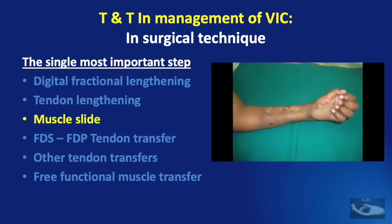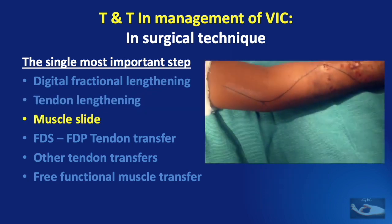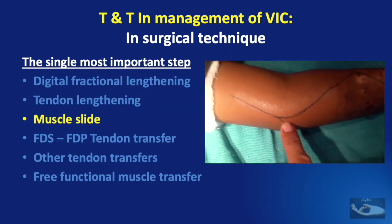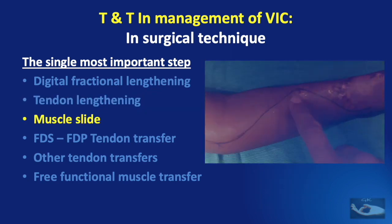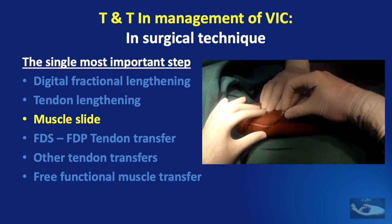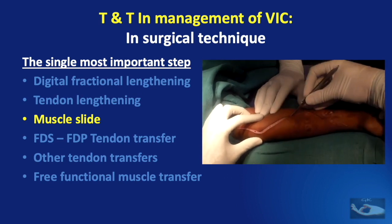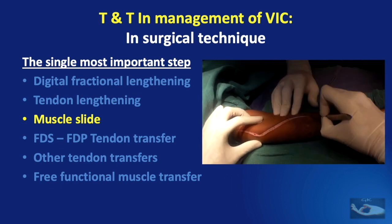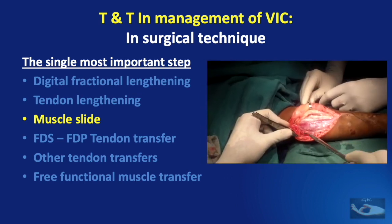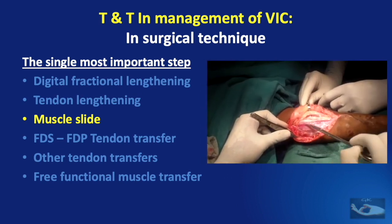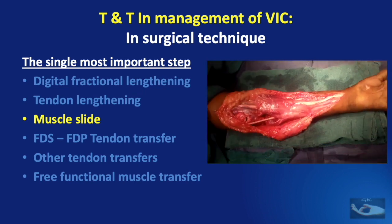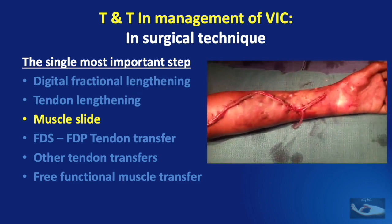In the muscle slide operation, an extensive incision on the forearm is made, the flexor origin is released, taking care to preserve the median and ulnar nerves, and the normal cascade position of the fingers must be achieved.